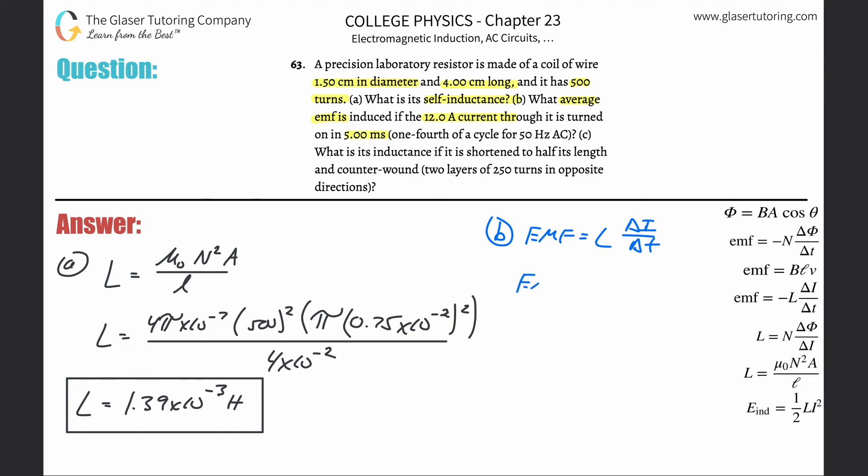I got rid of the negative sign, but I explained that in past problems. The inductance is what we just calculated: 1.39 × 10⁻³. The current is 12 amps. It's turned on, so it starts at zero and reaches 12, so that's 12 in the numerator, divided by the time.